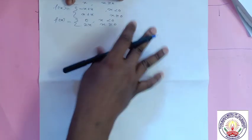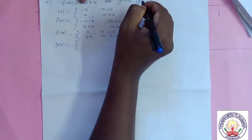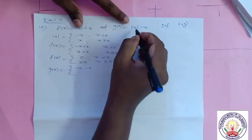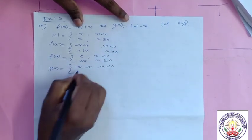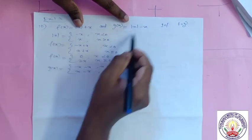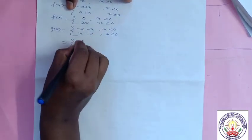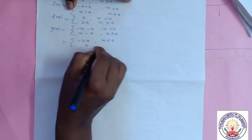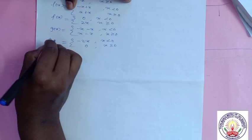Similarly we rearrange g(x) = |x| - x. When x < 0: |x| = -x, so g(x) = -x - x = -2x. When x ≥ 0: |x| = x, so g(x) = x - x = 0. So g(x) = -2x when x < 0, and 0 when x ≥ 0.